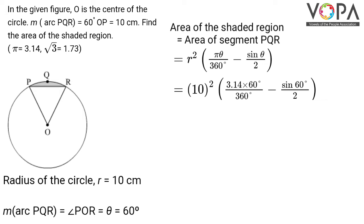60 in the numerator and 360 in the denominator simplify to 1/6. Then 10² = 100.